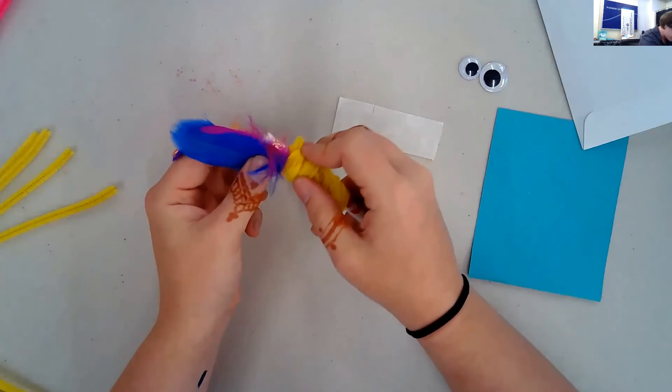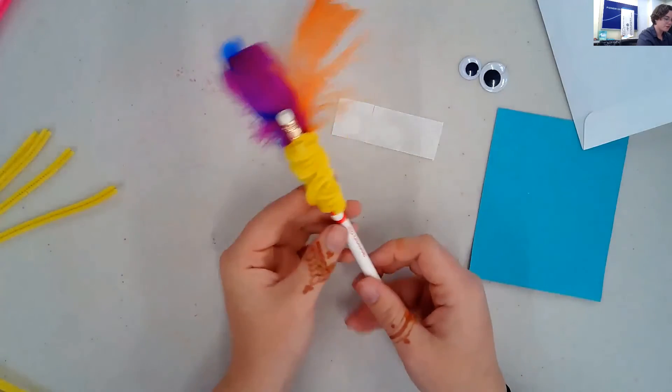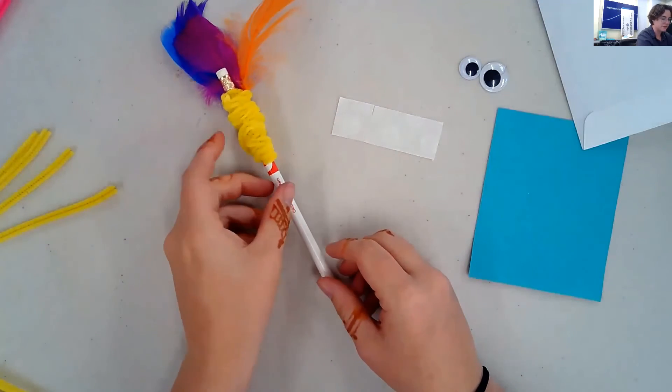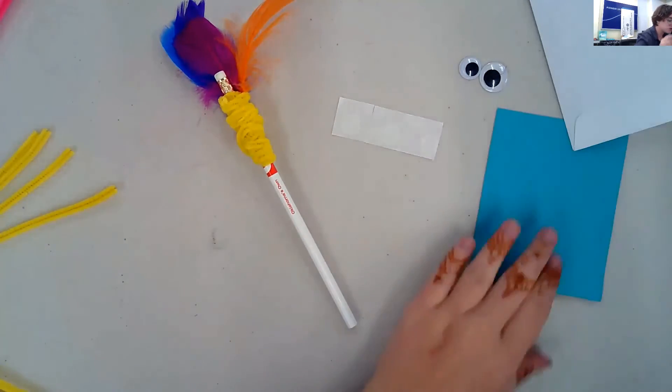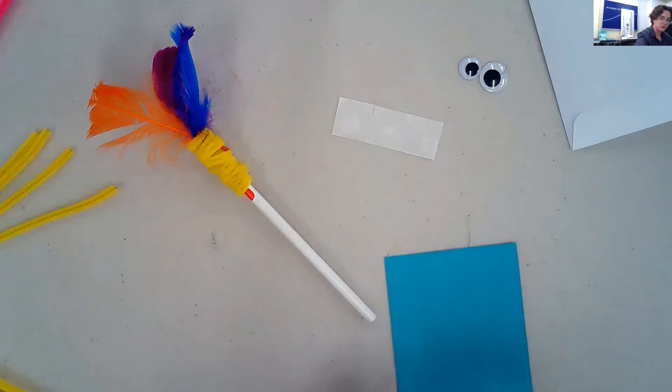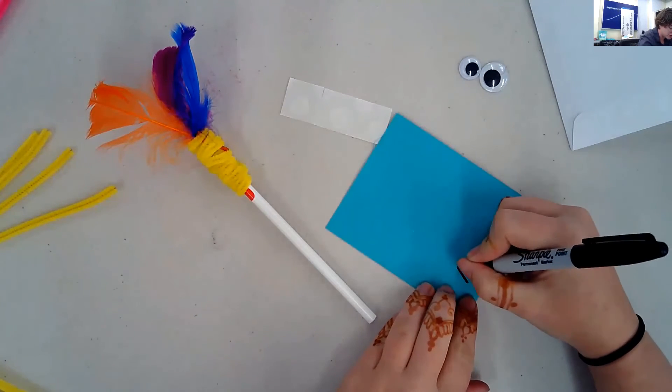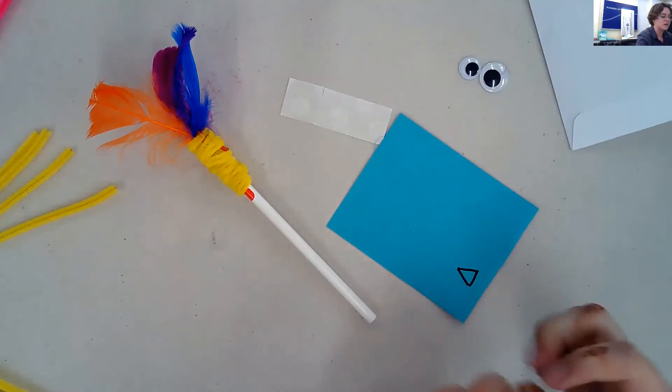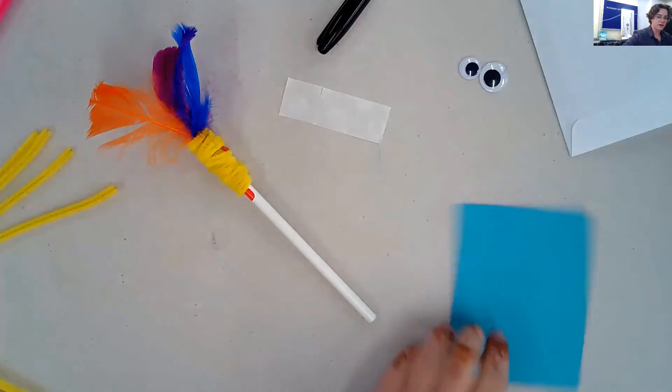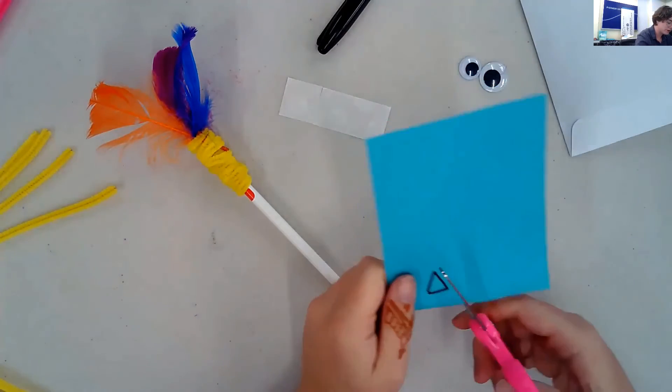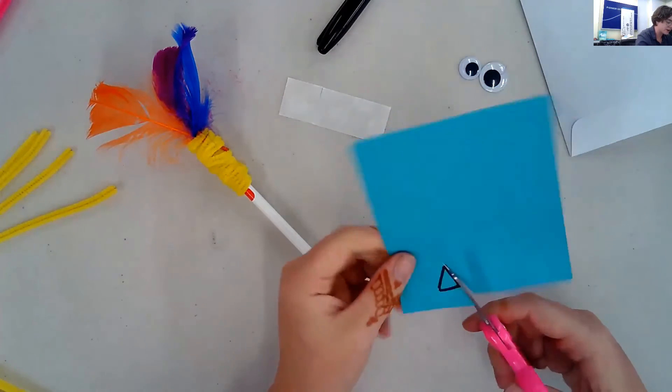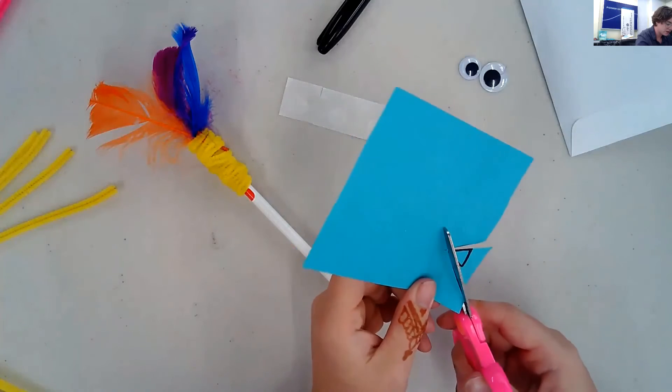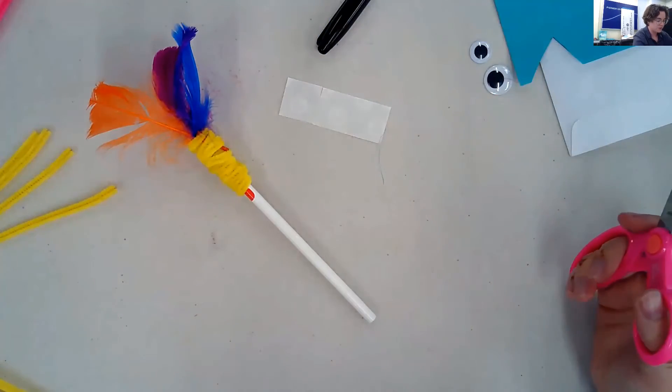Once you have your feathers on, we can start working on the face of your bird. I only have a Sharpie but I'm assuming you probably have a pencil or crayon. Go ahead and draw a little triangle. This little triangle is going to serve as your beak. You're going to want to cut out your little triangle either with the help of a guardian or if you can do it yourself. There is my little triangle.